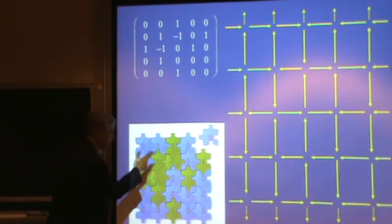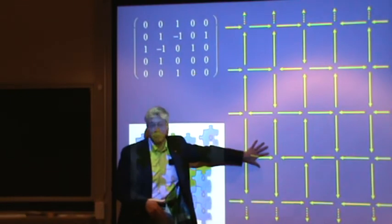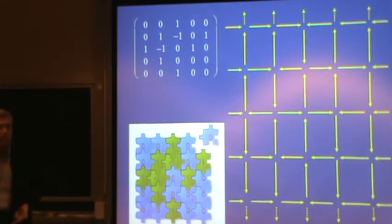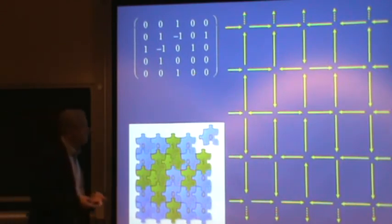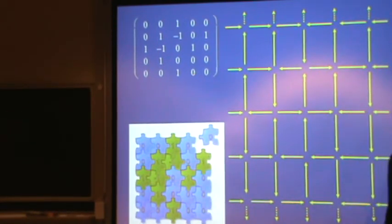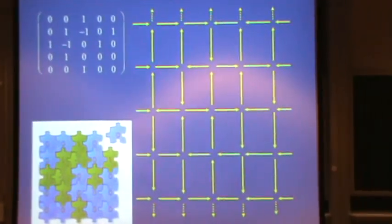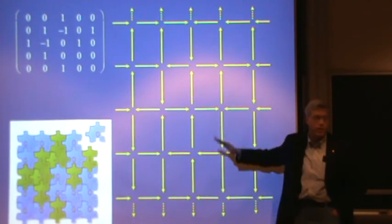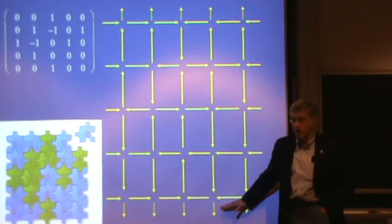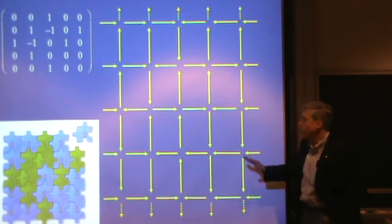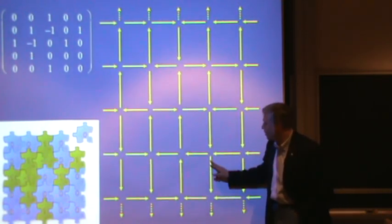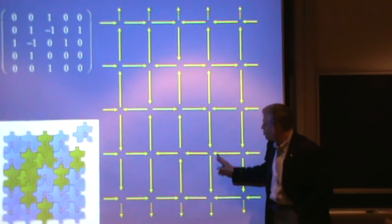And so the number of alternating sign matrices is just the number of six-vertex models, these directed graphs, with these particular boundary conditions. The physicists had been studying these six-vertex models for quite a while. The physicists weren't interested in the particular boundary conditions that arise in connection with the alternating sign matrices, which is one of the reasons that the connection had not been made before that. But they were interested in these directed graphs on a square grid in which you do have two...